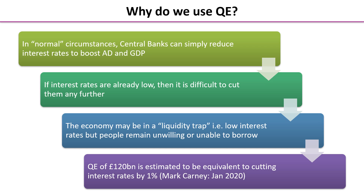Why do we use quantitative easing? Well, in normal circumstances central banks can simply reduce interest rates to boost aggregate demand and GDP. But as we saw from those graphs of the interest rates for the Bank of England, since 2008 they've dropped from around 5% to 0.5%, rose briefly to 0.75% in around 2018, but are now back down at 0.1%. So in effect, interest rates as a policy tool for monetary policy have run out of steam. We can't actually lower them anymore. And this is what we call the liquidity trap — where the interest rate is so low that even if you lower it a bit more, people are unwilling or unable to borrow any more.